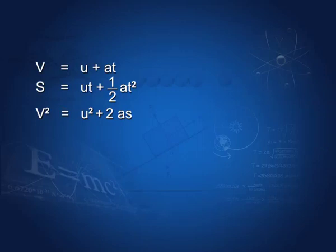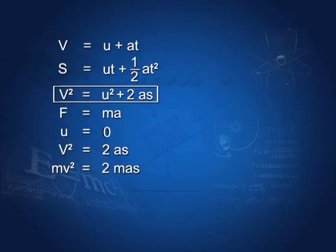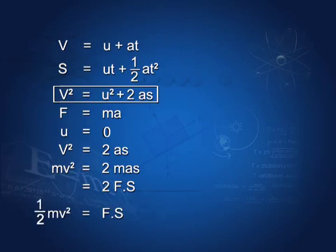Now let us see how this gives us the value for work done. If force F is applied on a body of mass m, an acceleration a is produced. Looking at this last equation, if our body starts from rest, u = 0, so v² = 2as. Multiplying both sides by m to get the factor ma — which we recognize as force — we get mv² = 2Fs, which can be written as ½mv² = F·s.